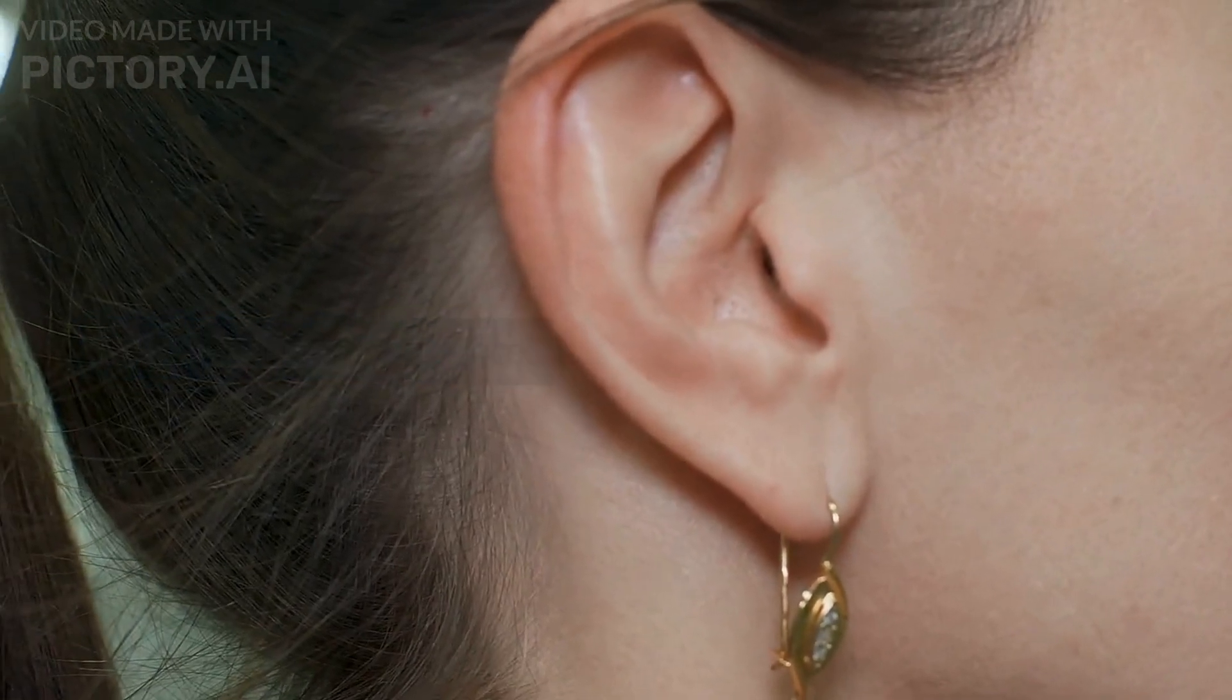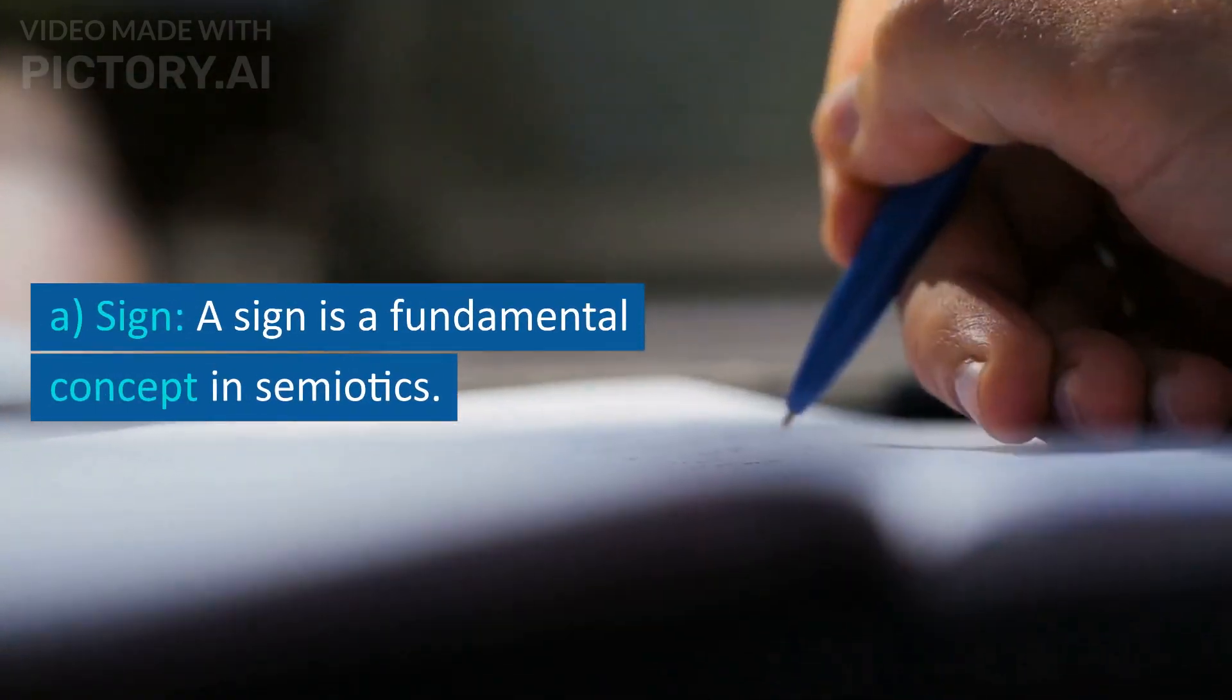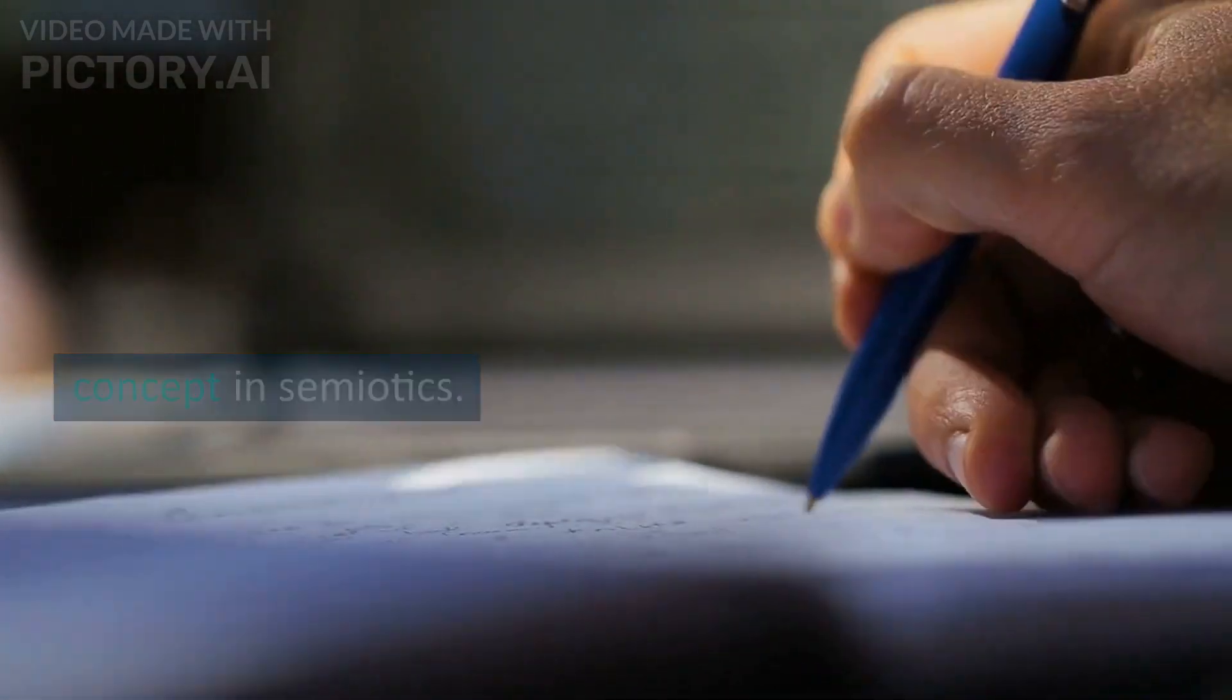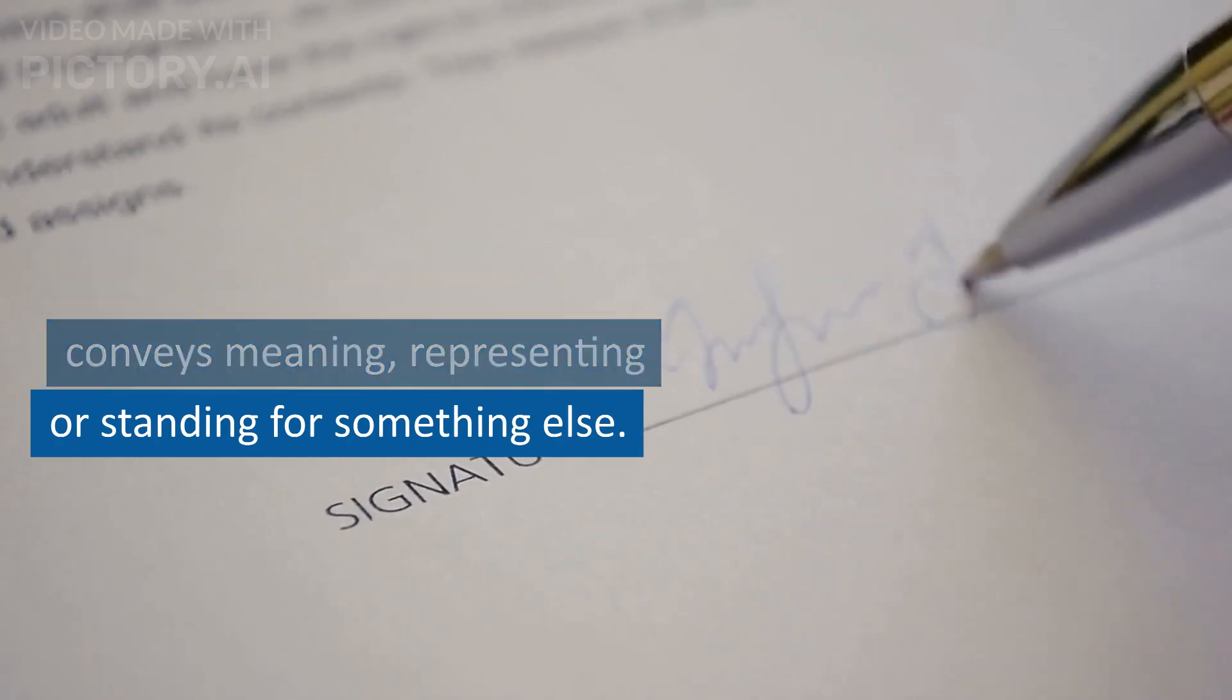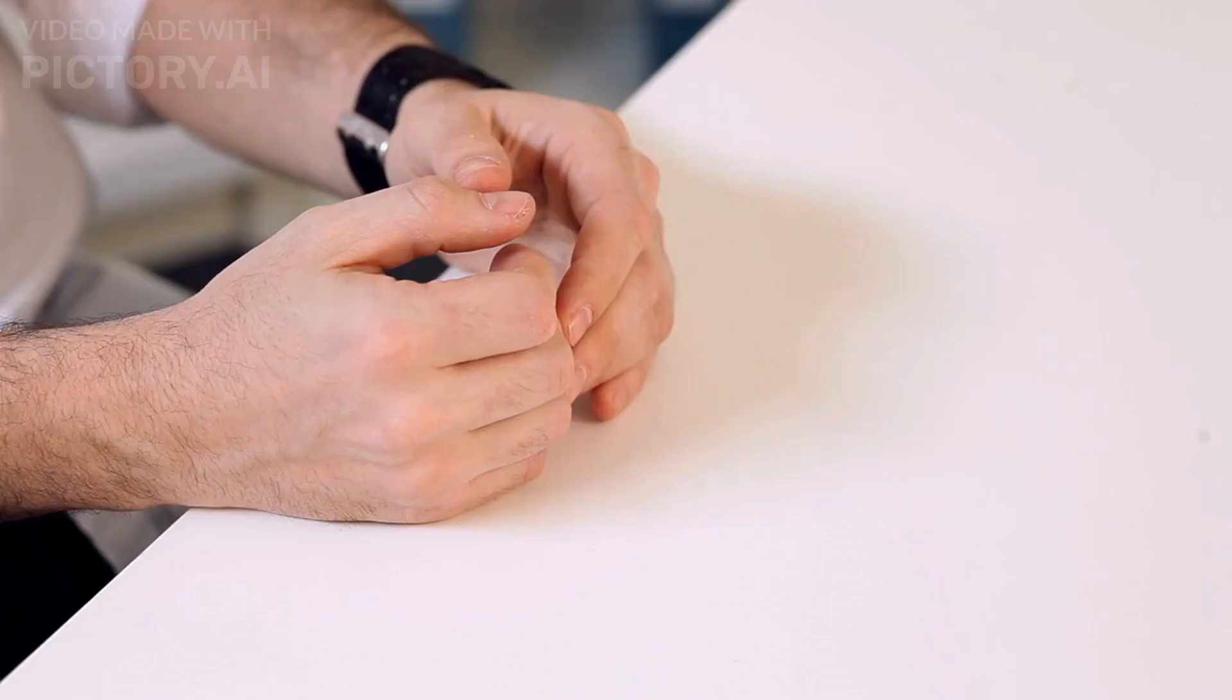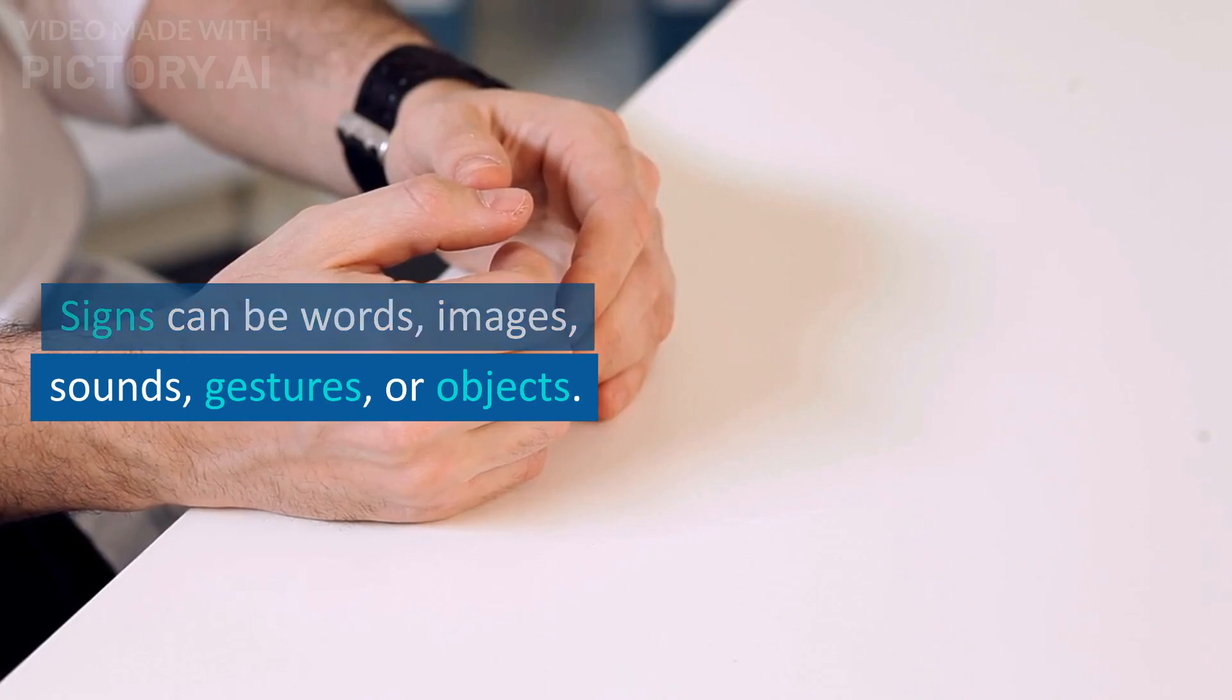Four semiotic concepts. Sign: A sign is a fundamental concept in semiotics. It refers to anything that conveys meaning, representing, or standing for something else. Signs can be words, images, sounds, gestures, or objects.